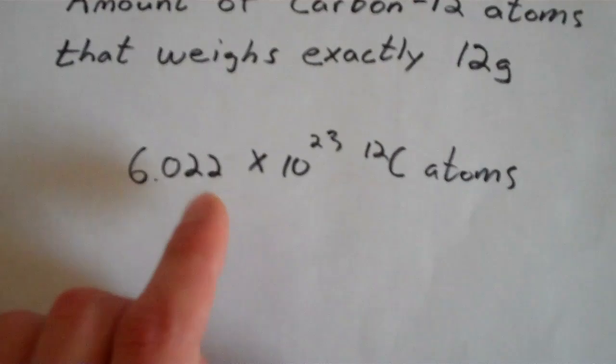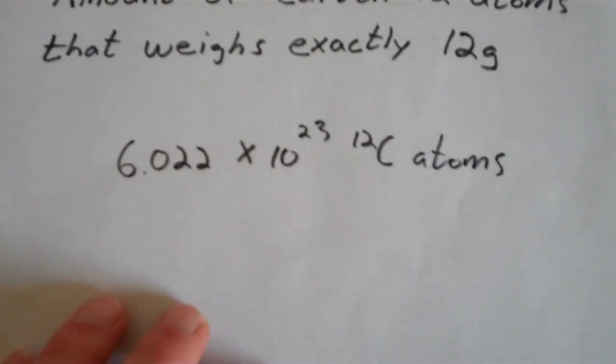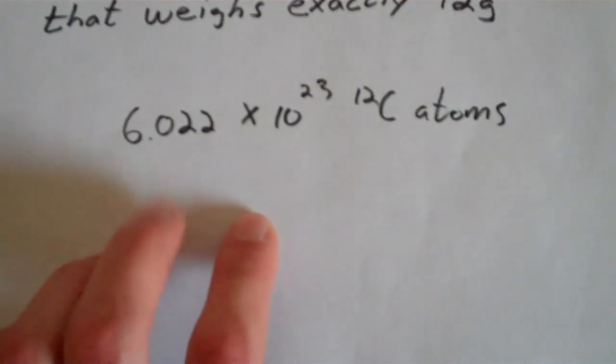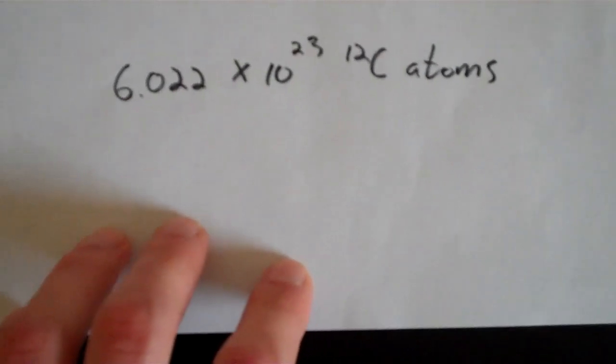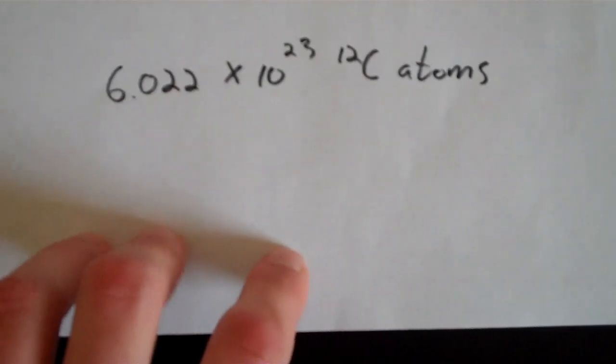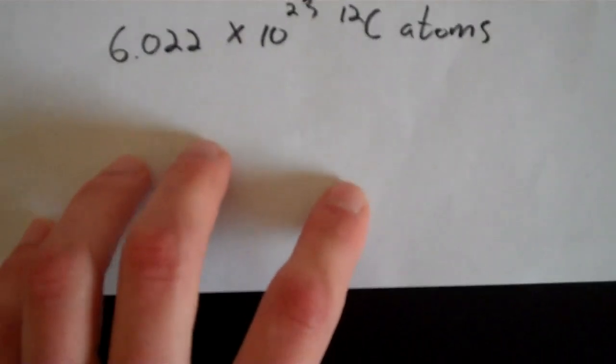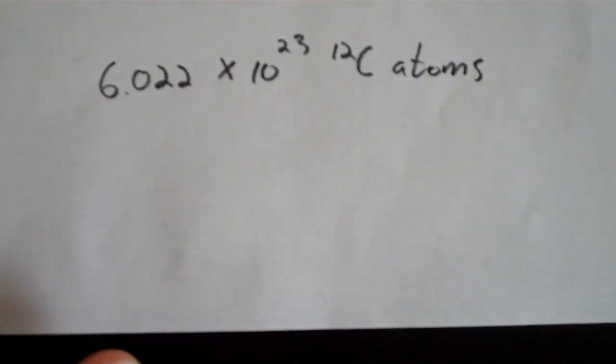So anytime you have a mole of anything, that just means you're multiplying this number by one of whatever you're talking about. So a mole of eggs would be 6.022 times 10 to the 23rd eggs. A mole of pennies would be 6.022 times 10 to the 23rd pennies. Or a mole of water molecules, a mole of water would be 6.022 times 10 to the 23rd water molecules. So that's how a mole works.